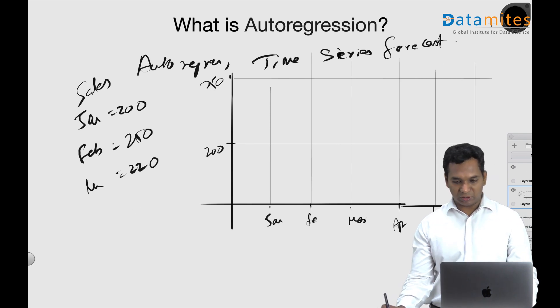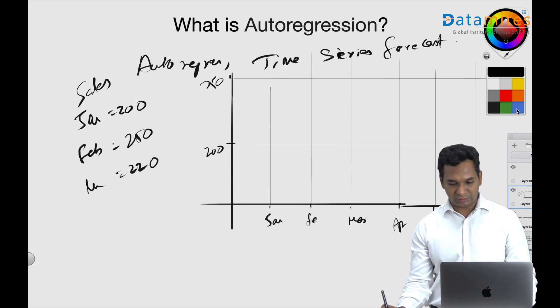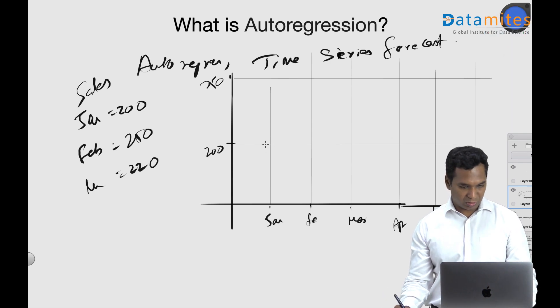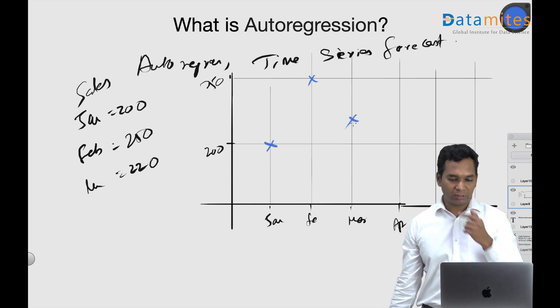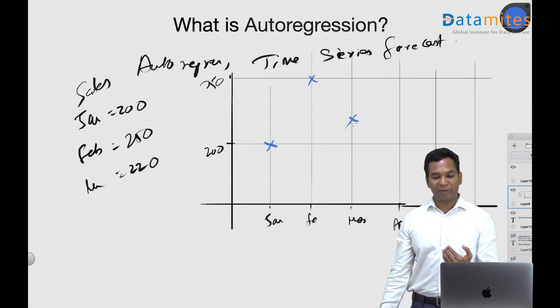And I'm going to just put this data over here. So this is 200 in January, 250 in February, and March is like 220.